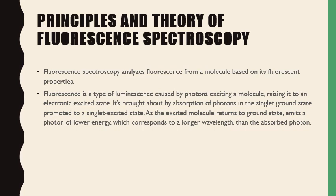Fluorescence is a type of luminescence caused by a photon exciting a molecule to an electronic excited state, brought about by absorption of a photon. The molecule is promoted from the singlet ground state S₀ to a singlet excited state. As the excited molecule returns to the ground state, it must emit a photon of lower energy — that is why this emission is shown on the right-hand side, corresponding to lower energy than the absorption photon. This spectroscopy analyzes fluorescence from a molecule based on its fluorescence properties.